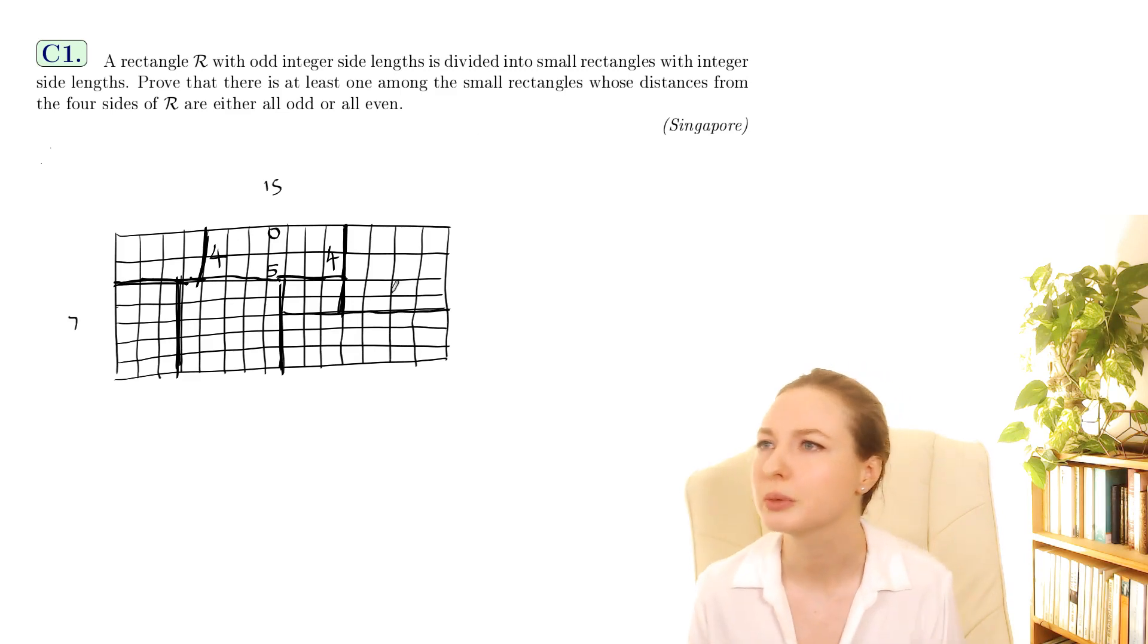So then we can work out which one it means. Let's look at this one. Its distance from these two sides is both zero and then the distance to this side is four and the distance to that side is eight I think. Yeah so that one has the distances all even so that's one of the rectangles that it's talking about.